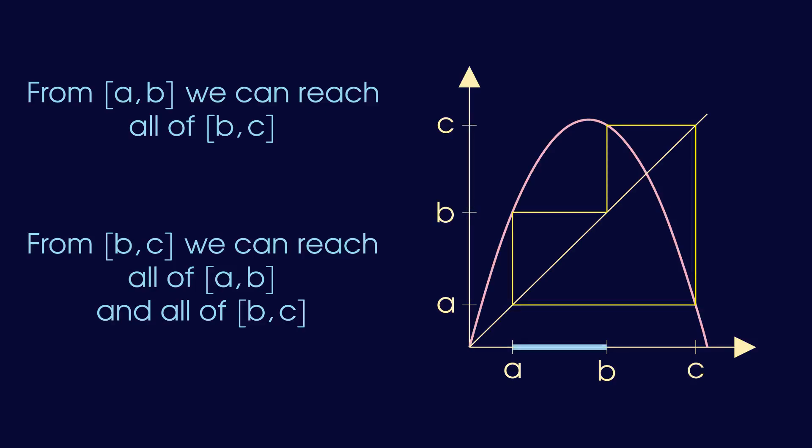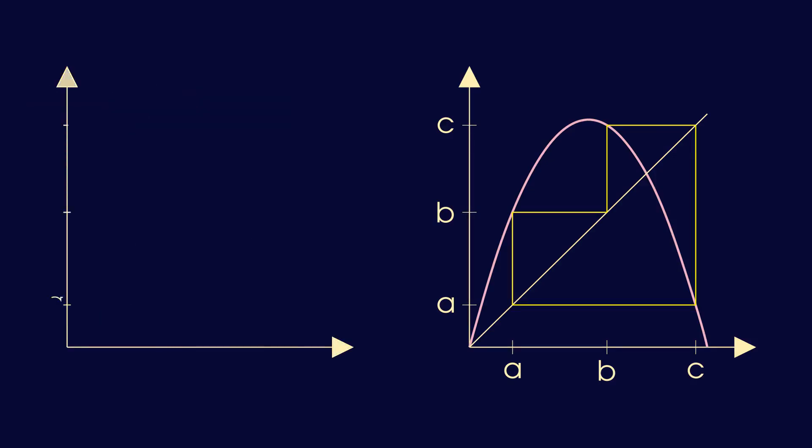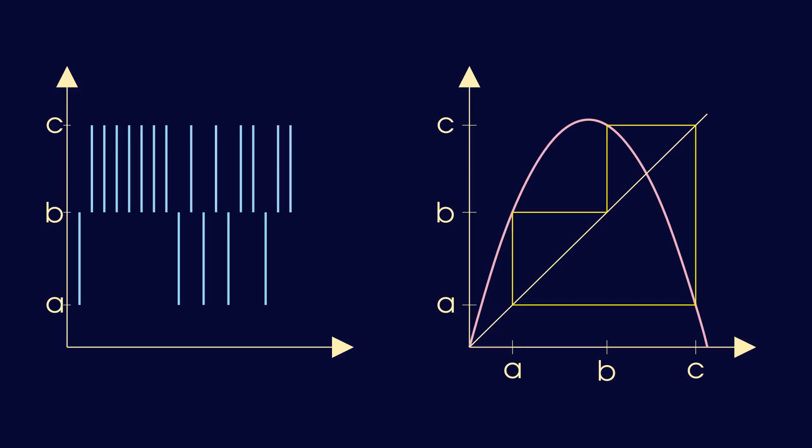In other words, from ab we can transition into bc, and from bc we can transition into either interval. Now, to find a solution with certain properties, we can specify which interval it should be in at each point in time. On the plot on the left we draw what looks like a barcode that the values must lie in. And as long as we respect the possible transitions, meaning that this barcode should not have the lower interval ab at two consecutive points in time, then we will be able to find a solution within any such barcode.